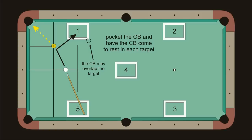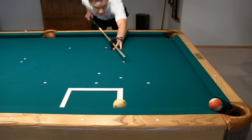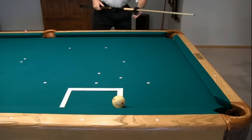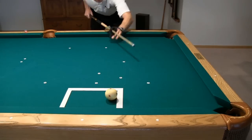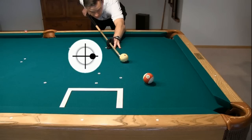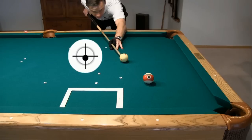Now let's look at example shot options for each target position, starting with number one. The simplest option is just to slow roll the shot. If you want to avoid the risk of the edge of the rectangle pushing the cue ball out, you can use a little more speed. And if you want to increase the margin for error, use right English to send the cue ball closer to the center of the target.